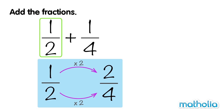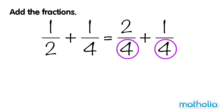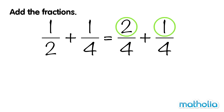1 half and 2 quarters are equivalent fractions. So we can rewrite 1 half plus 1 quarter as 2 quarters plus 1 quarter. The denominators are now the same — the fractions are like fractions. Let's add the numerators: 2 plus 1 equals 3. So 2 quarters plus 1 quarter equals 3 quarters.